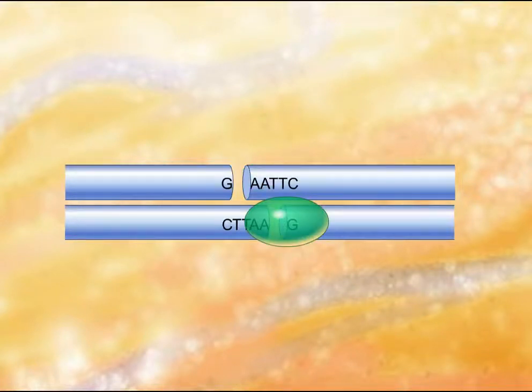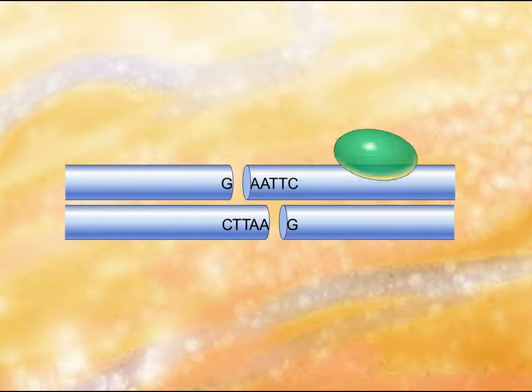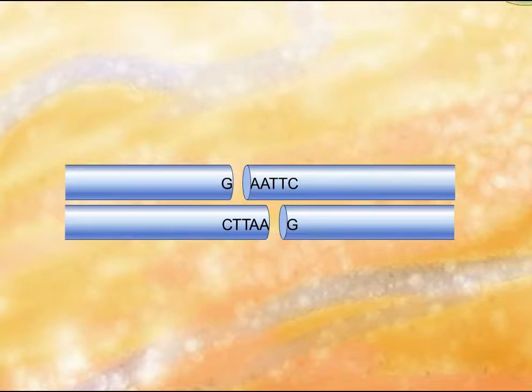Because the bond cleaved is typically not positioned in the center of the recognition sequence, and the DNA strands are anti-parallel, the cut sites are offset from each other.